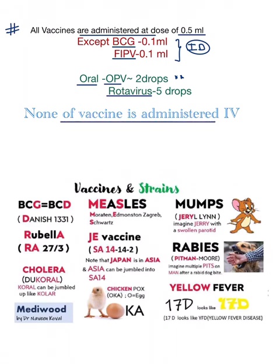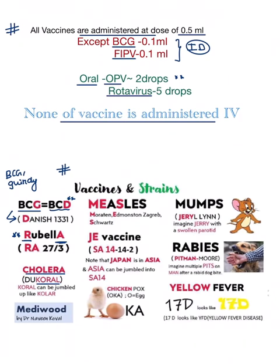Remember, for none of the vaccines is the route of administration IV. Now for famous strains that repeatedly come in exams: BCG is manufactured from the Danish 1331 strain, produced at the BCG Research Institute, Guindy, Chennai. The rubella strain is RA 27/3, and the cholera strain is the Dukordi strain.